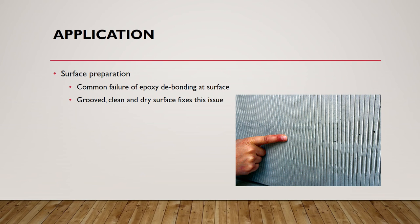One of the major problems of using FRP as a repair method is a common failure mode of epoxy debonding at the concrete surface. This can be due to improper application processes, lack of surface preparation of the concrete, environmental factors, and even inaccessible locations of the member in need of repair. To improve bonding, workers add a groove to the concrete to increase the surface area of contact.